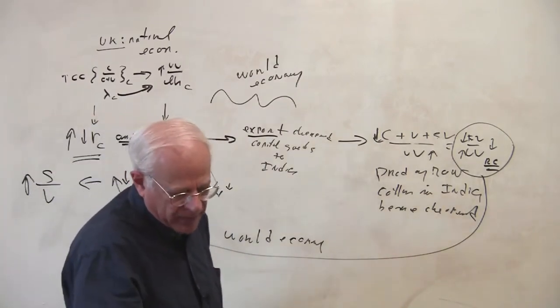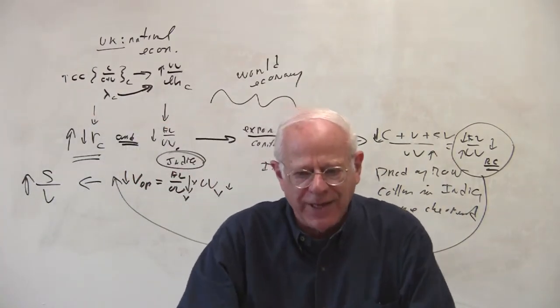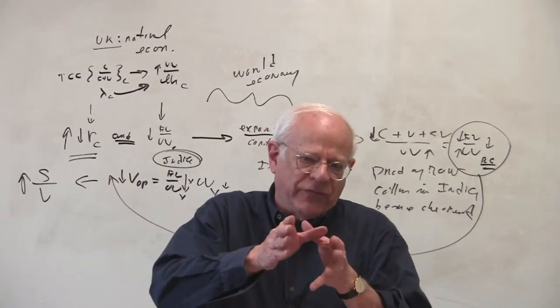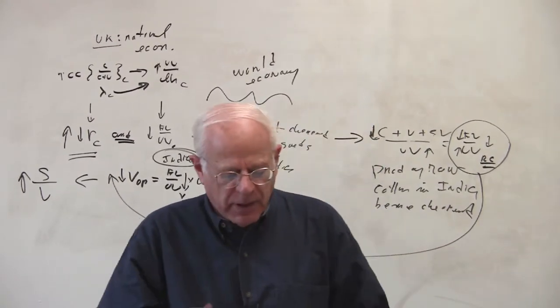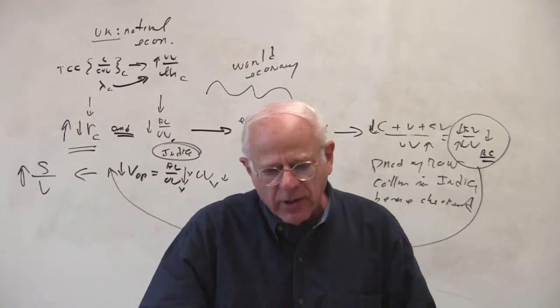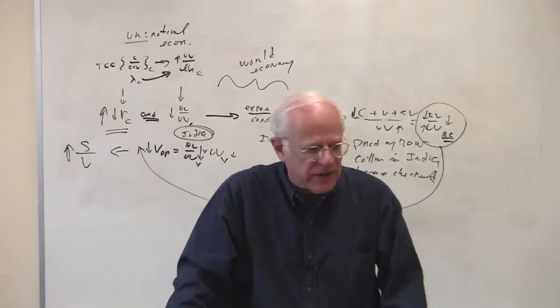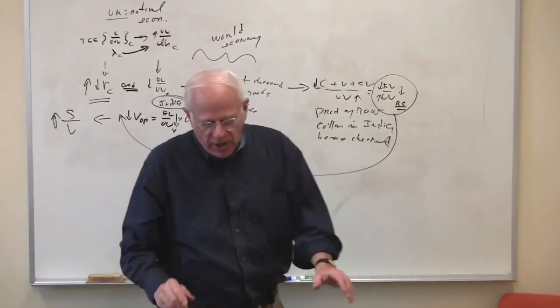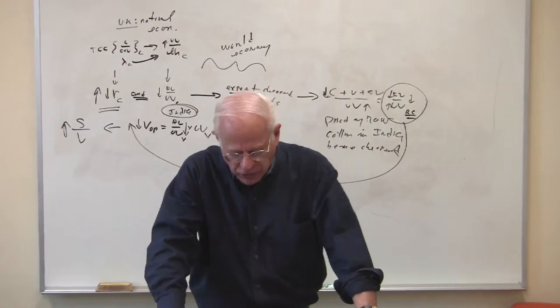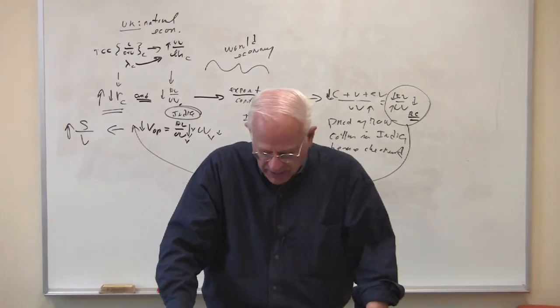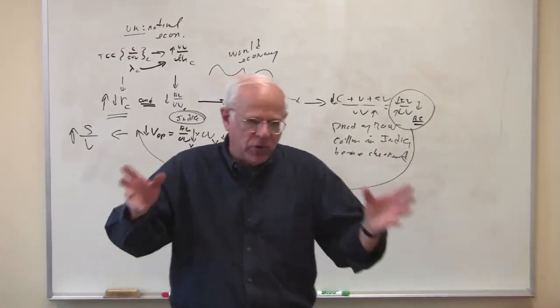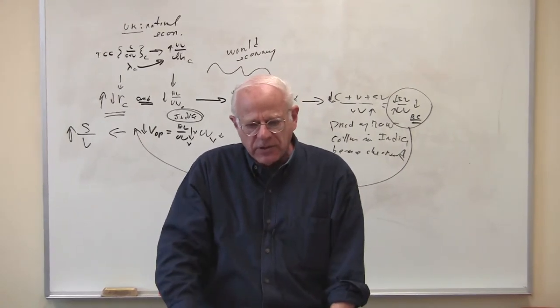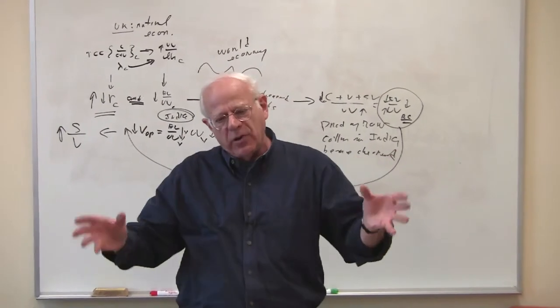Okay, so the world economy becomes a way to connect these different capitals competing with one another, and what I just did for the C good could be done for V goods as well, because it's not just raw cotton, but it's also all kinds of tea and coffee and sugar and meat and grains and tobacco and, of course, cocoa.